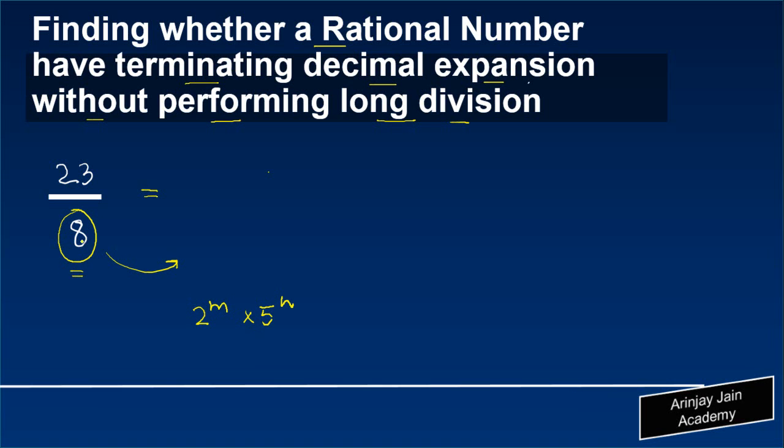In this case, if you write 8 as 2 to the power m and 5 to the power n, there will be nothing about 5 because 8 is not divisible by 5, so we just write this as 5 to the power 0. Now we know 8 can be written as 2 cube.